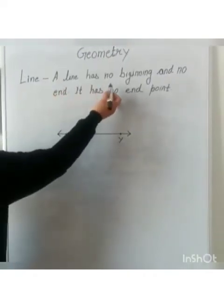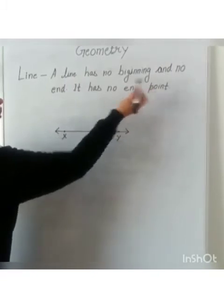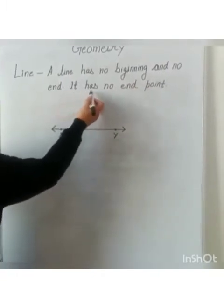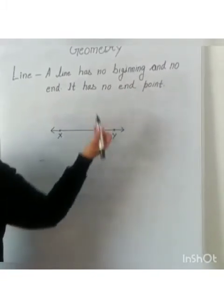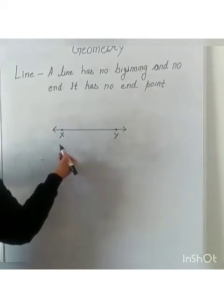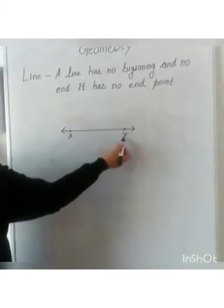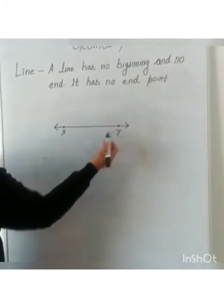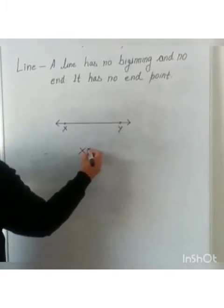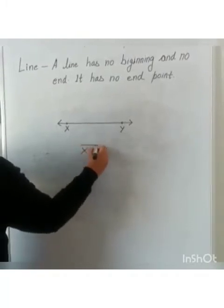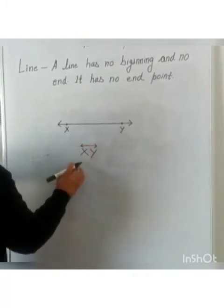A line has no beginning and no end. It has no end point. Now, this is the line that I have drawn. I have given the name X and Y. This is line XY. And we will represent it as XY line like this.